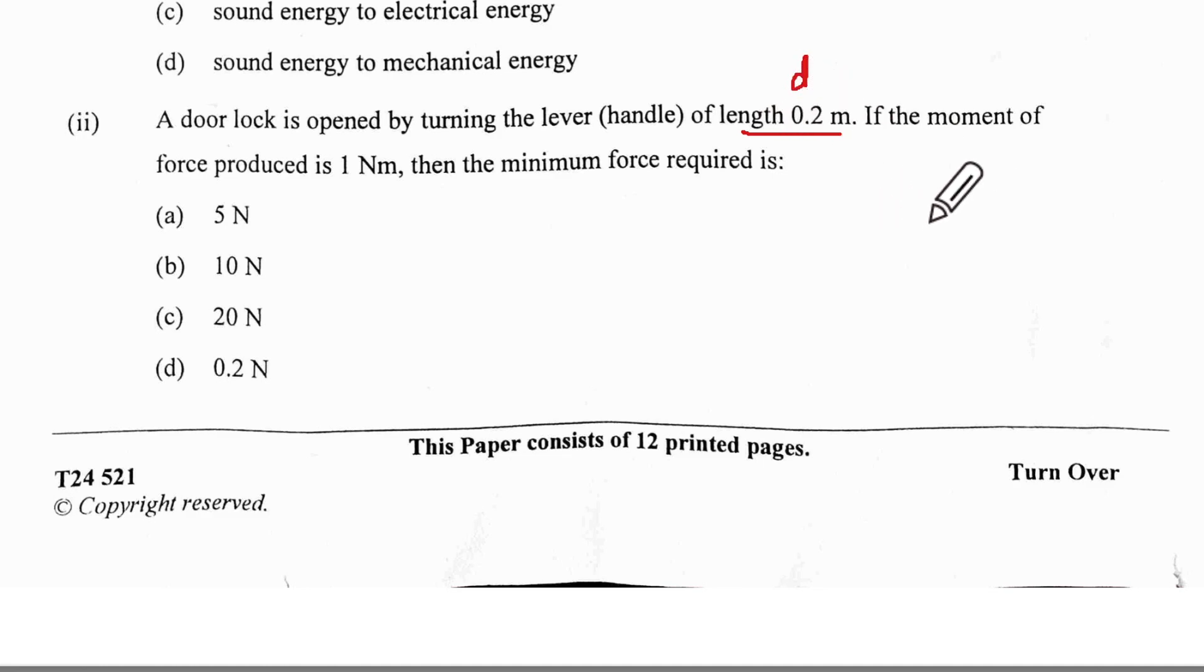The moment of force is 1 newton meter. The moment of force is going to be force times the perpendicular distance, which is 0.2. So the force becomes 1 Nm divided by 0.2, which comes out to be 5 newtons. The answer is A.